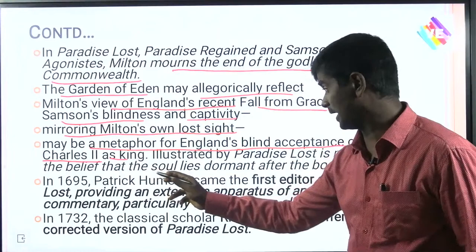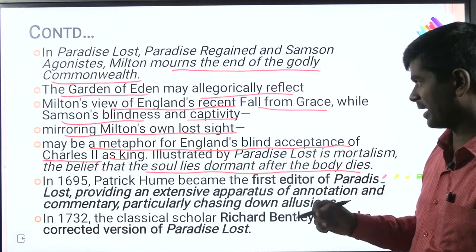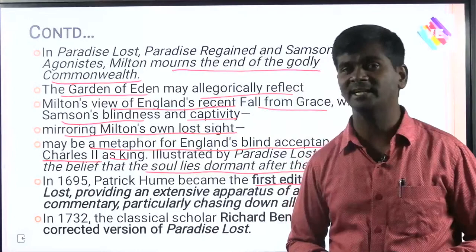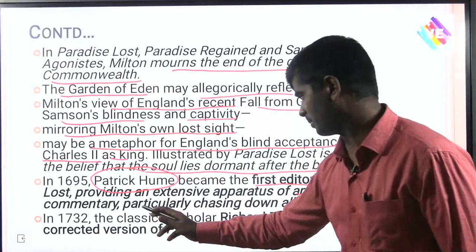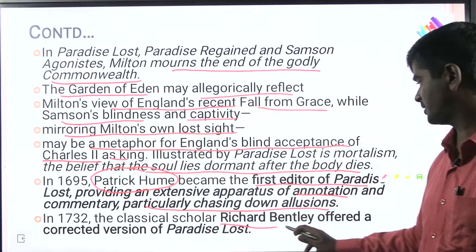Paradise Lost was also translated into German by Theodor Haak. Samuel Johnson wrote numerous essays on Paradise Lost. Milton was included in Johnson's Lives of the Most Eminent English Poets. Keats found Paradise Lost a beautiful and grand curiosity, but his own unfinished epic Hyperion was unsatisfactory to the author because it had too many Miltonic inversions.